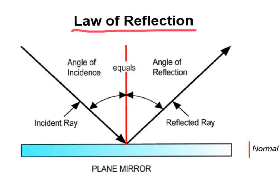What is the law of reflection? According to the law of reflection, the angle of incidence is always equal to the angle of reflection. If we draw a line perpendicular to our reflecting surface, that line is called the normal — normal actually means perpendicular to. The angle of incidence is the angle between that normal line and the incoming ray, and the angle of reflection is the angle between the normal and the reflected ray.